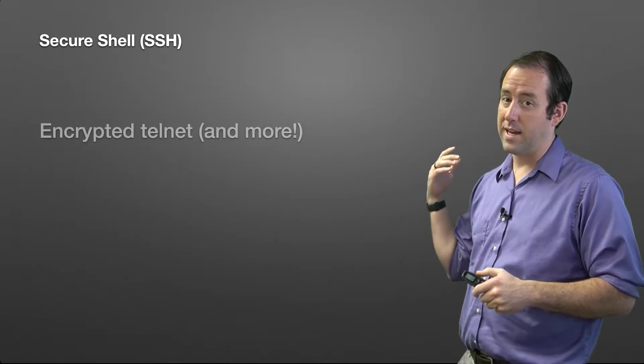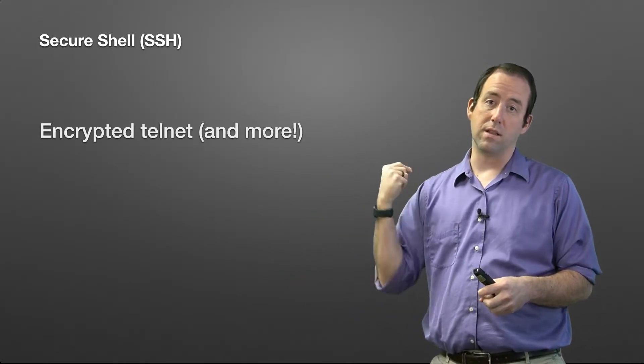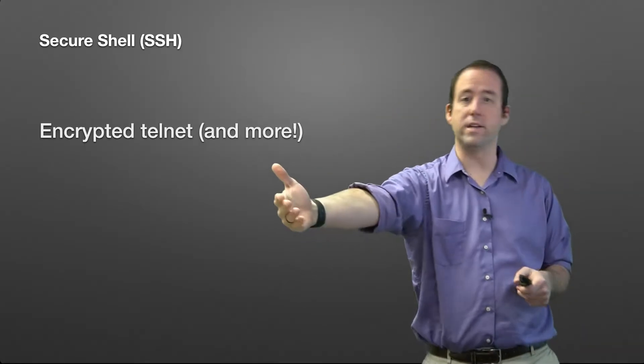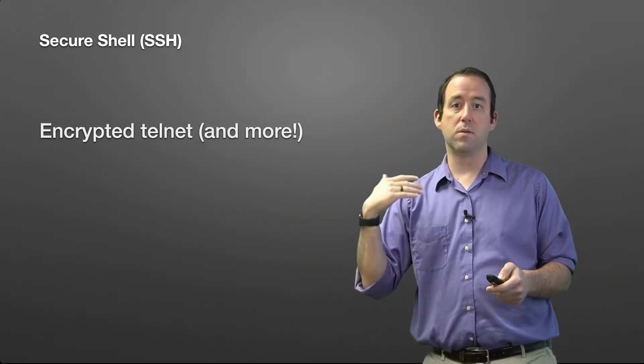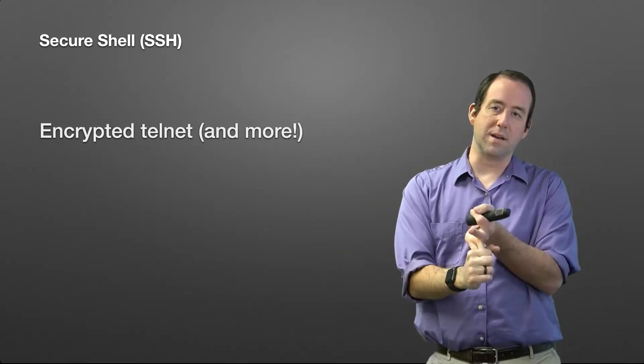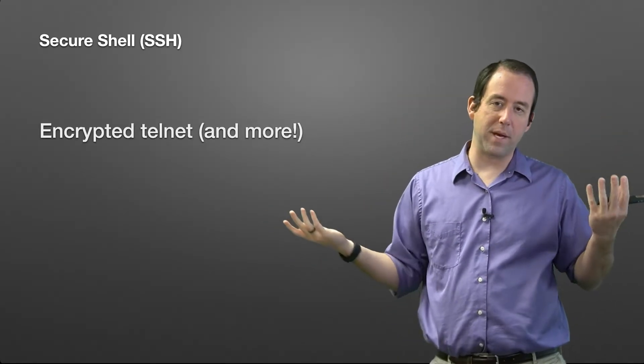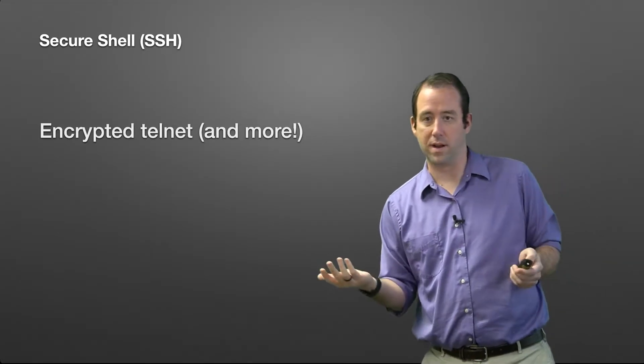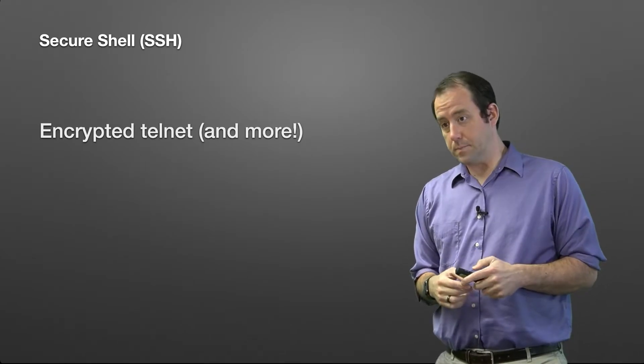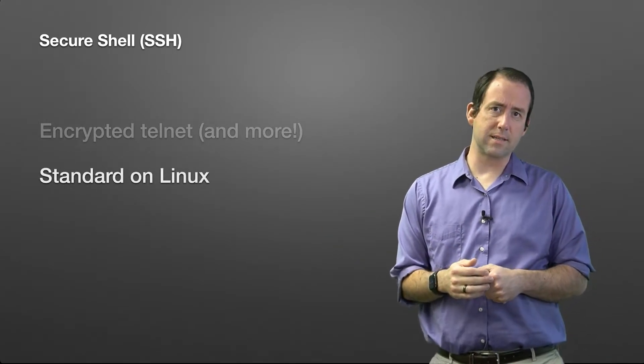After Telnet, we needed a protocol without that glaring security vulnerability of being unencrypted. The replacement — and the standard today — is the Secure Shell, or SSH. If you've ever connected to a Linux server, you've used SSH because it is absolutely the standard. It's just like Telnet in that it gives you remote access: you log in, type commands on your computer, and they go to the remote server. It's just encrypted, so it's secure — nobody can listen in or mess with your traffic.